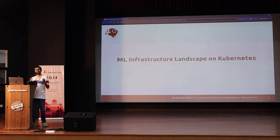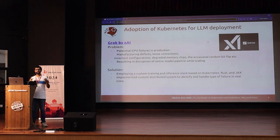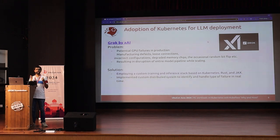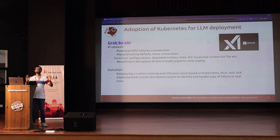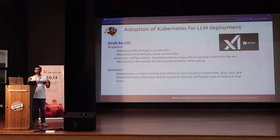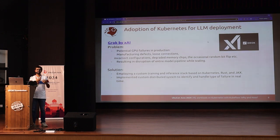Now let's talk about the machine learning and infrastructure landscape on Kubernetes. How many of you have heard about xAI, the company by Elon Musk? They are building their own large language model called Grok. Even if you've used Twitter, you might have seen Grok appear there. It's a very open and capable model — for example, if you ask it to generate an image of Elon Musk hugging Mark Zuckerberg, which would never happen in real life, it can do that, which wouldn't be allowed on certain other platforms.